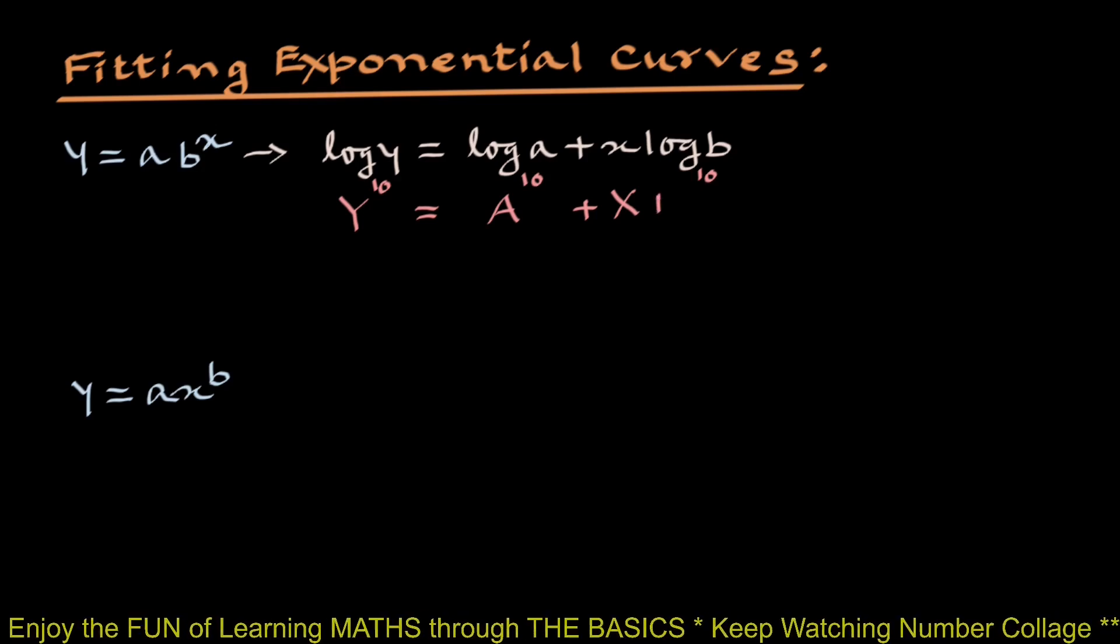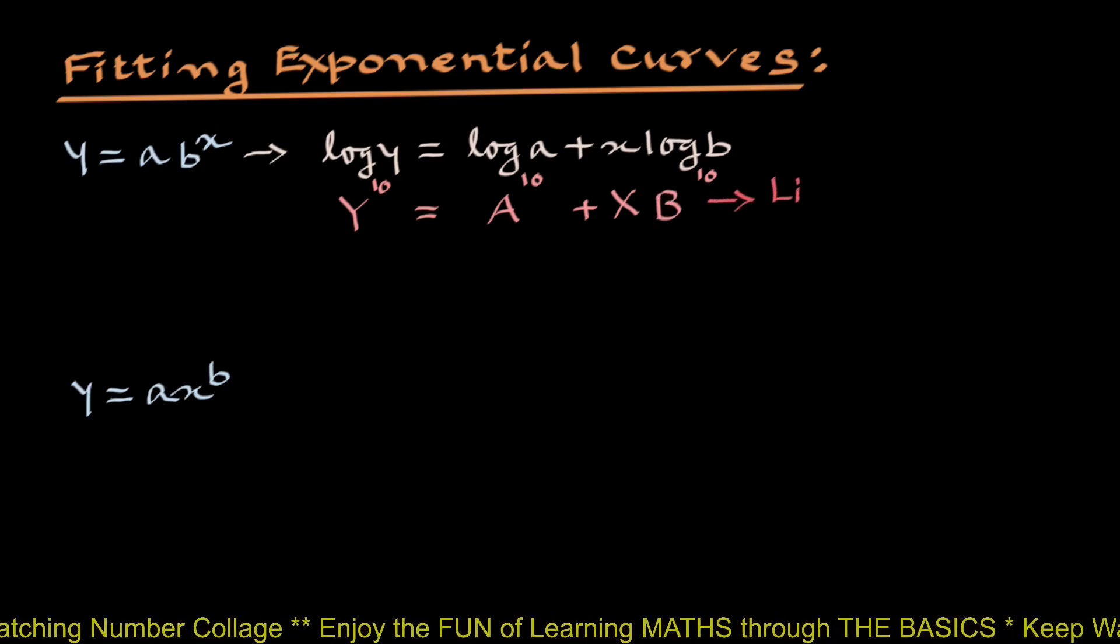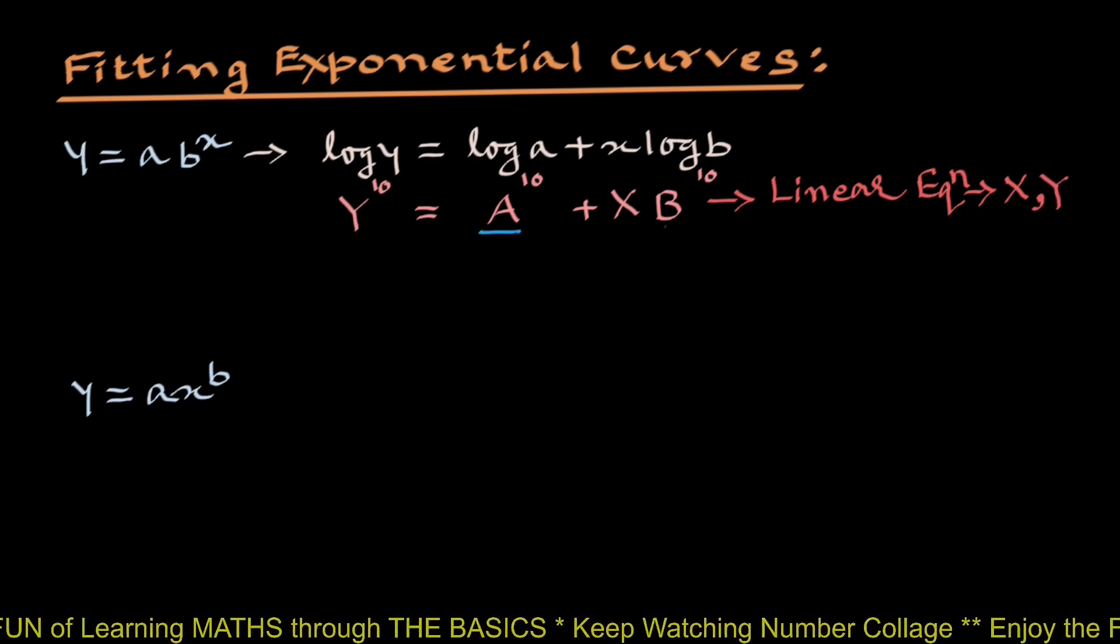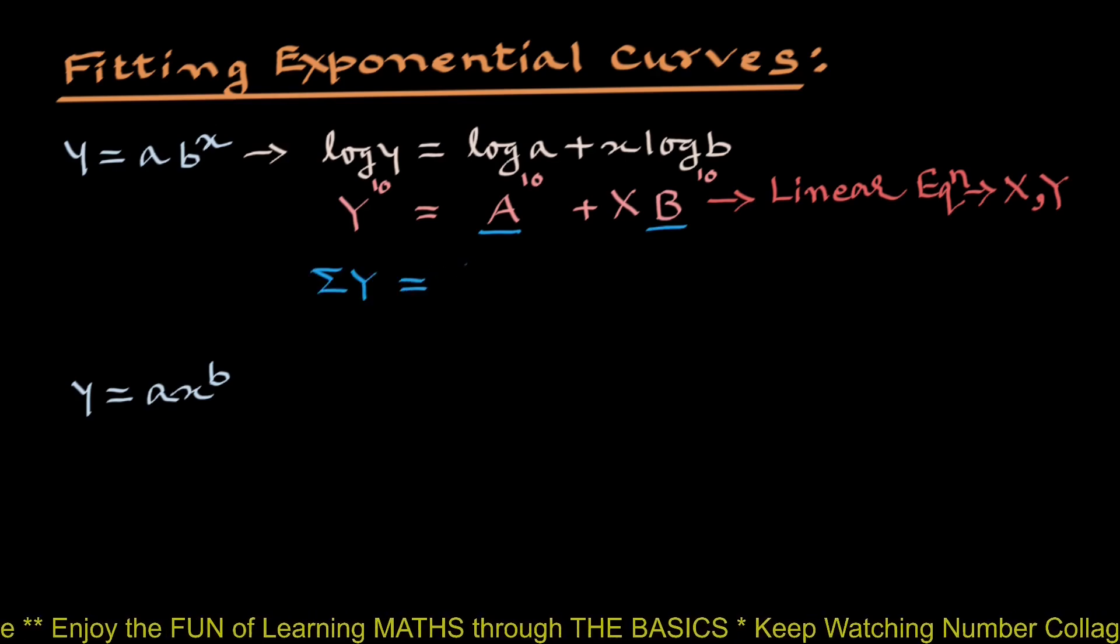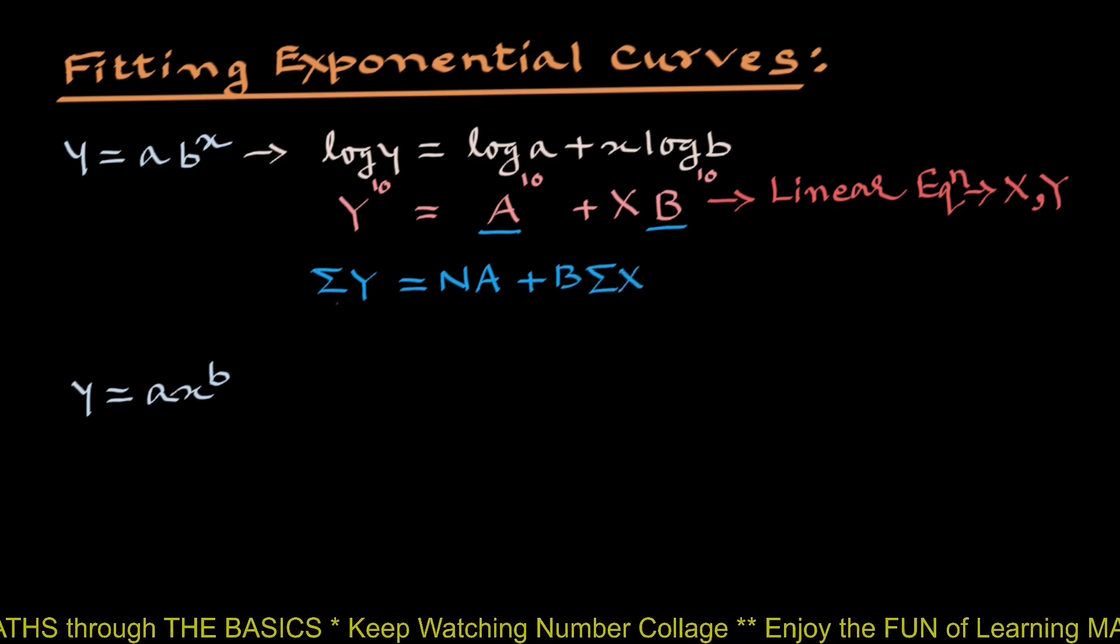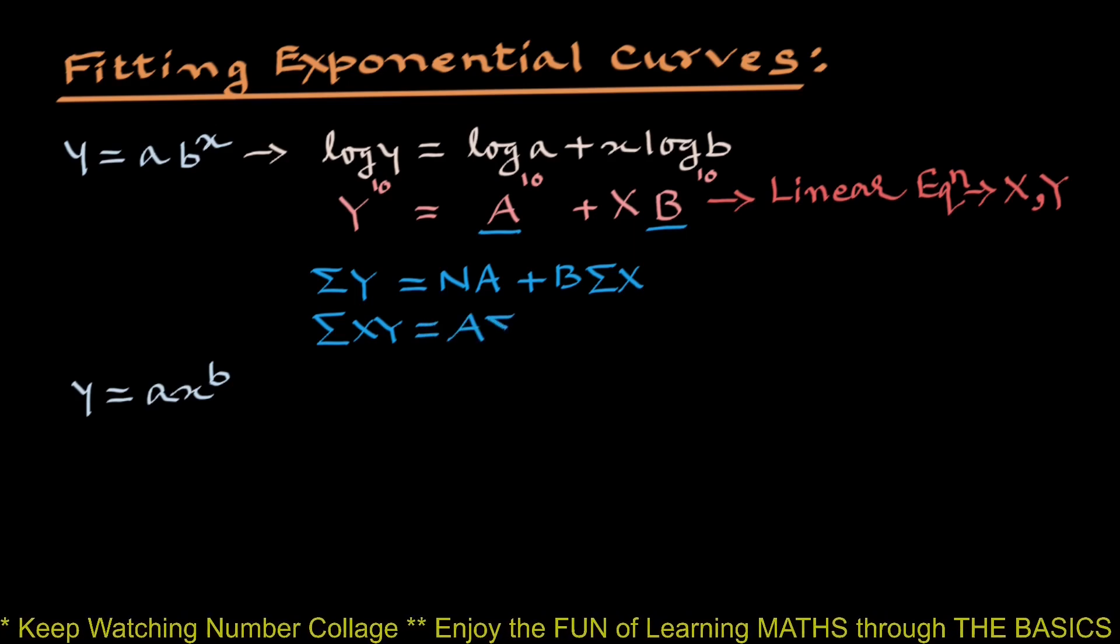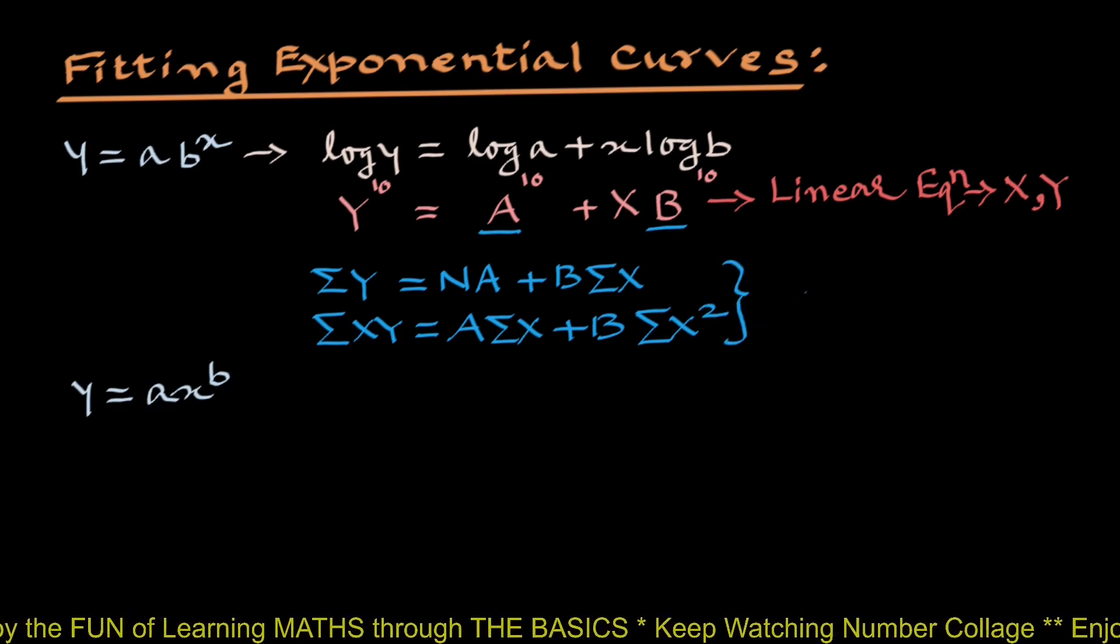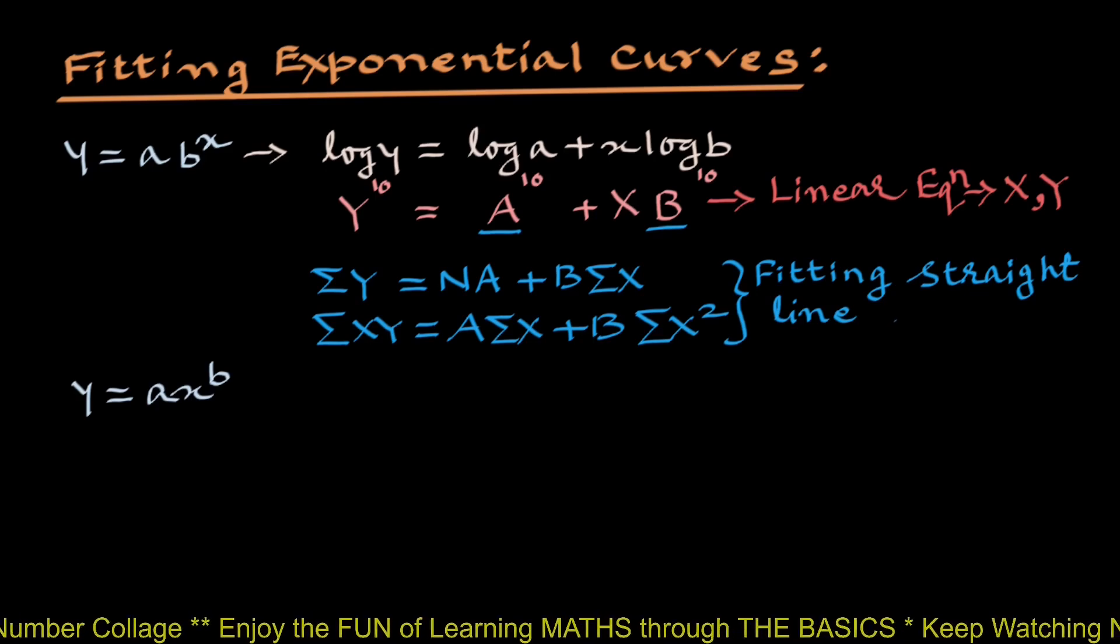This is a linear equation in two variables X and Y and we can obtain constants a and b from the normal equations sigma Y equals nA plus B summation X and sigma XY equals A summation X plus B summation X square that we have used in fitting straight line to the given set of points.